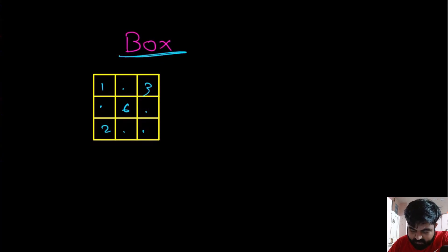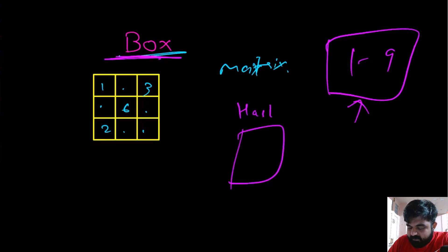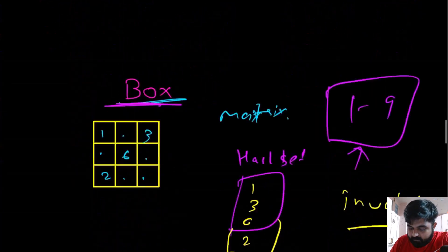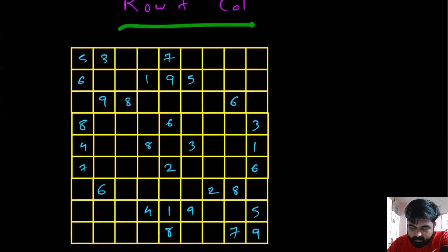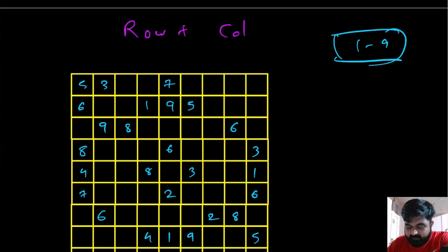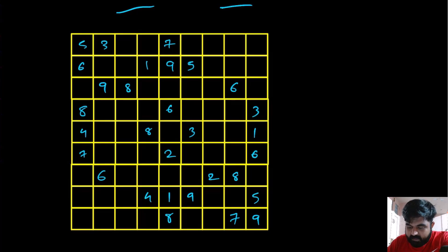For the box, this is a matrix-type structure. Our main objective remains the same — ensure there are no duplicated entries for filled values between one to nine. For the box, we also create a hash set and apply the same logic, adding entries until we find any duplicate. The tricky part, however, is that boxes require establishing a correlation between a set of different rows and different columns, which is not as straightforward as rows or columns.